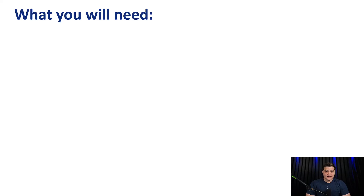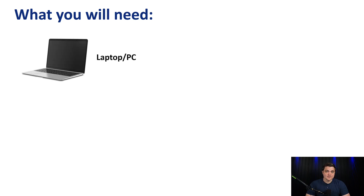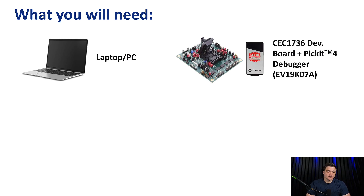If you're interested in following along with the demo or programming your own parts, here's the list of things you're going to need. On the hardware side, first you will need a laptop or PC running either a Windows or a Linux operating system. Next, you'll need the CEC1736 development board together with the PICkit debugger. This debugger is used to program the SPY flashes that are on the development board, which will contain the code that we're going to monitor during runtime. I won't be using this for the sake of the demo, but I will be using the development board as shown here.